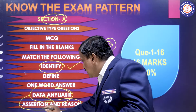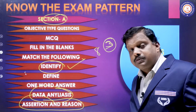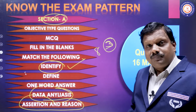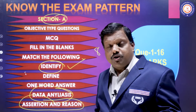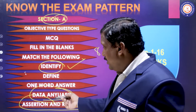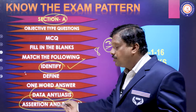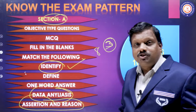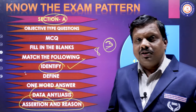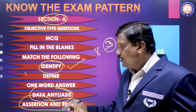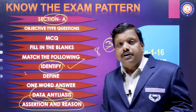For assertion and reason, the options are: A and R are right and R is the correct explanation of A; A and R are right but R is not the correct explanation of A; A is right, R is wrong; or R is right, A is wrong. Most probably — about 90% of the time — the answer will be option A: both A and R are right and R is the correct explanation of A.